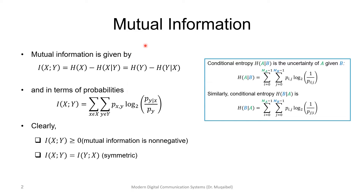One thing to note is that the mutual information — the common information between the output and the input — is always a non-negative quantity. It can be zero, so it includes positive and zero. And it's symmetric: the mutual information between X and Y is the same as the mutual information between Y and X. This is an important slide because it has a definition.